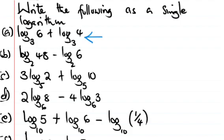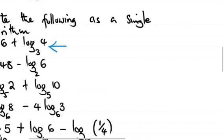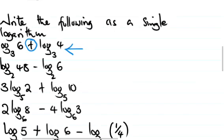We should write log base 3 of 6 plus log base 3 of 4 as a single log. When you see this plus sign here, we are adding logs of the same base. We are going to keep the log base 3 and multiply the numbers: 6 and 4.